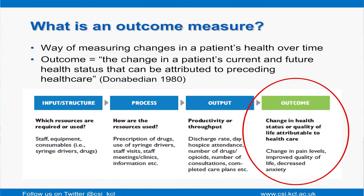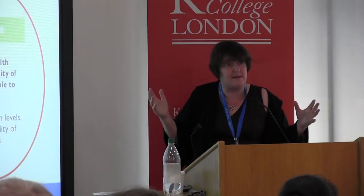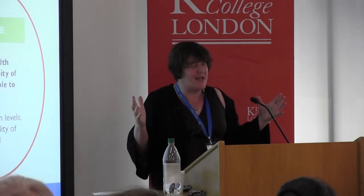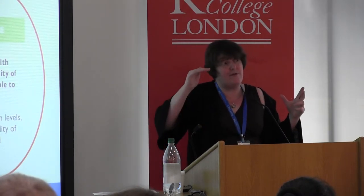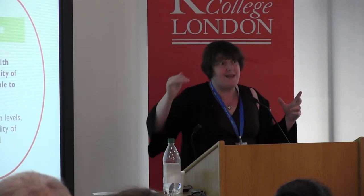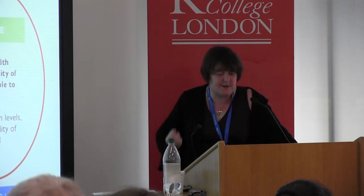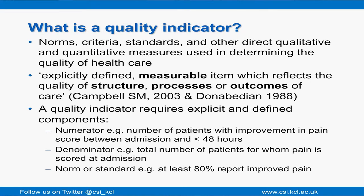I make no excuse in going back to what an outcome measure is, because so many of us forget. The lay use of the word 'outcome' as simply a result of something often falls across our language, but what I mean here is a change in the patient's or the family's health over time in the broadest sense. This comes to the question raised earlier: a quality indicator is a norm, criteria, or standard to determine the quality of health care, and it has to be measurable.